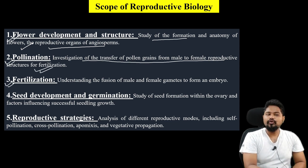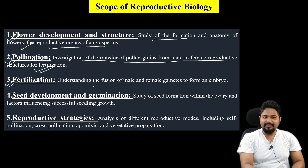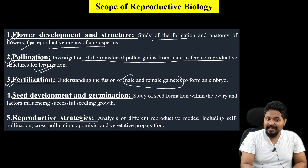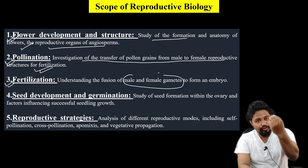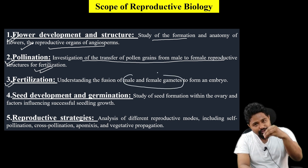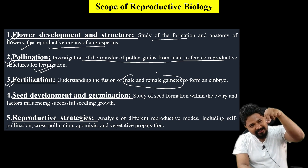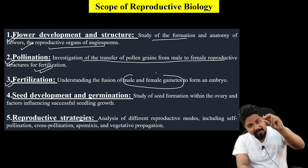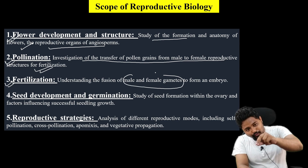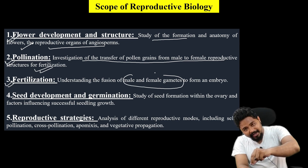Next is the fertilization concept. We are understanding the fusion of male and female gametes — what is fusion? What are the male gametes, and how do they germinate? The male nucleus transfers to achieve fertilization.